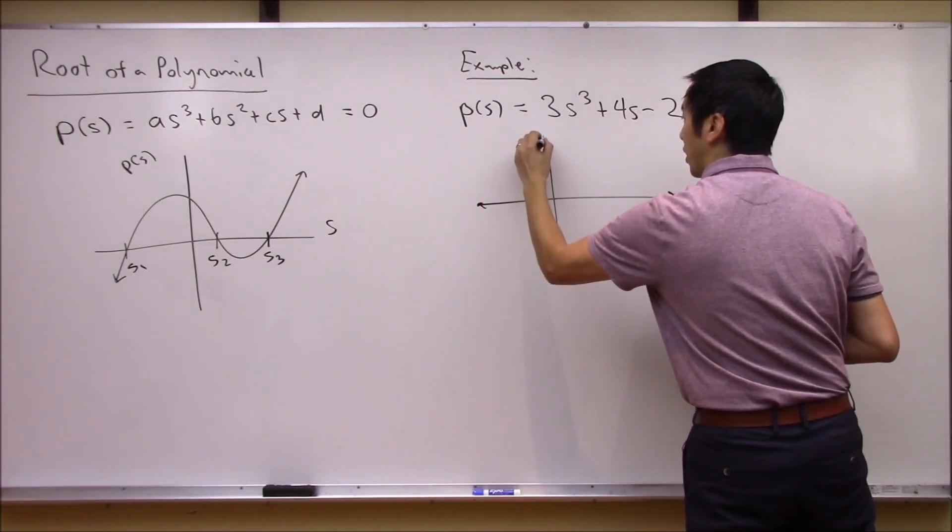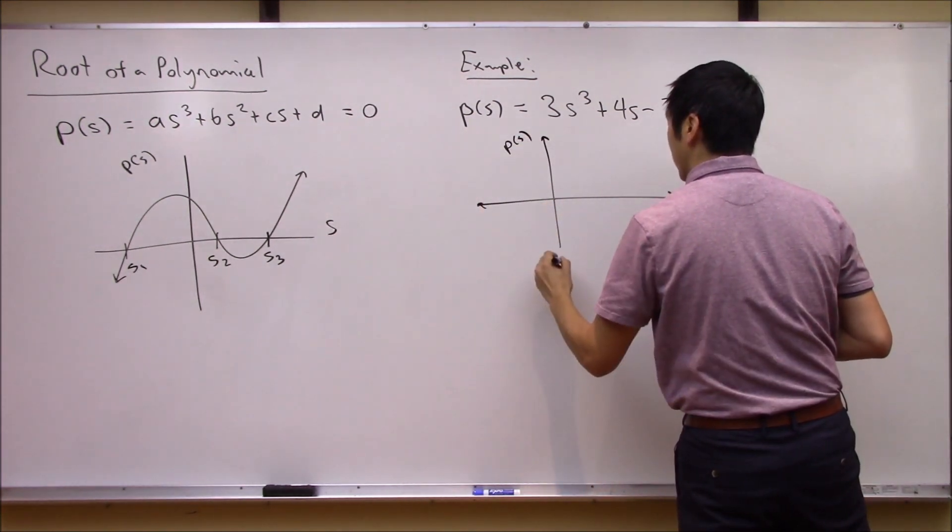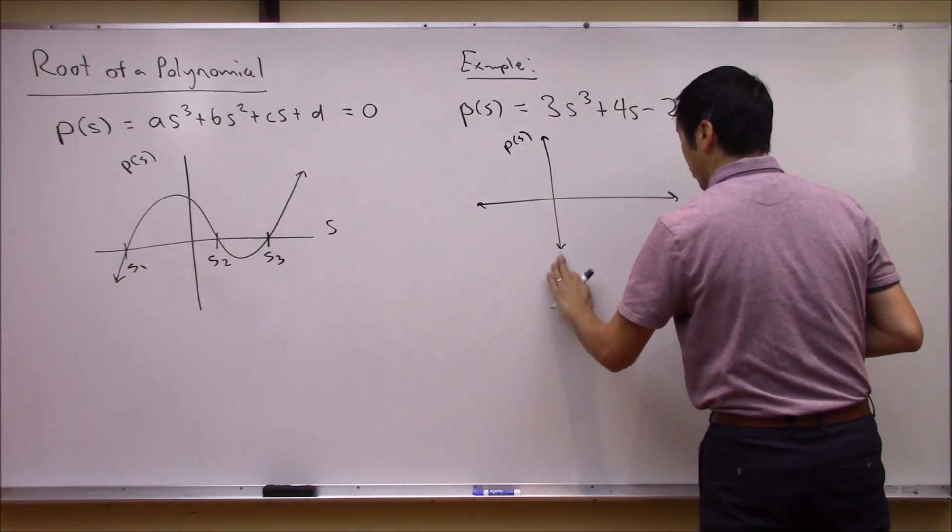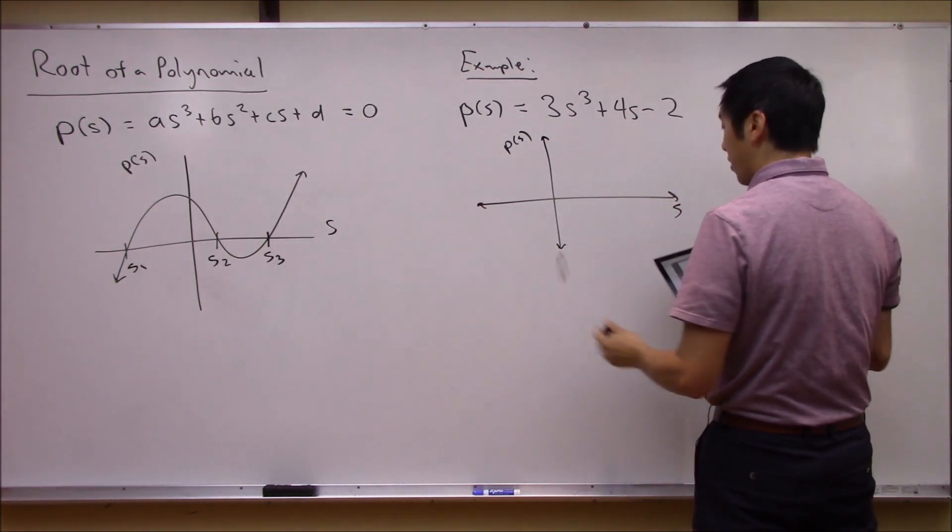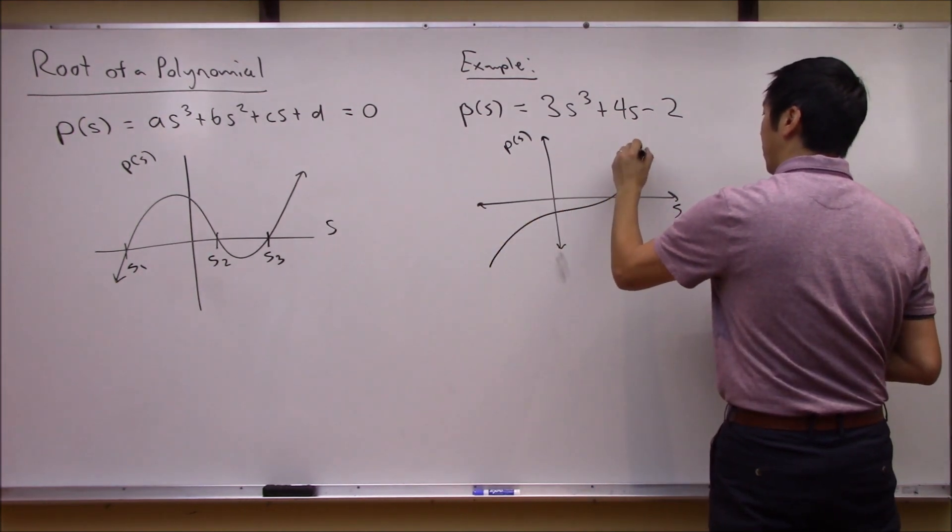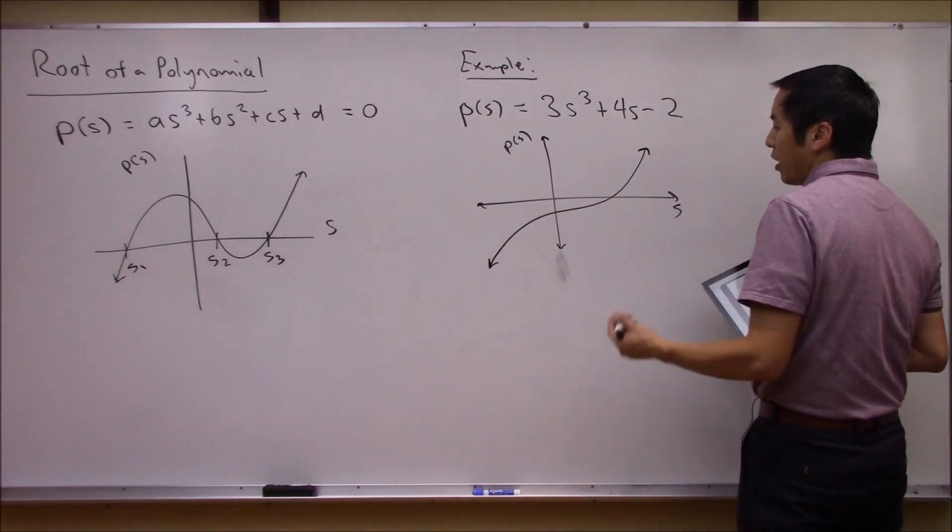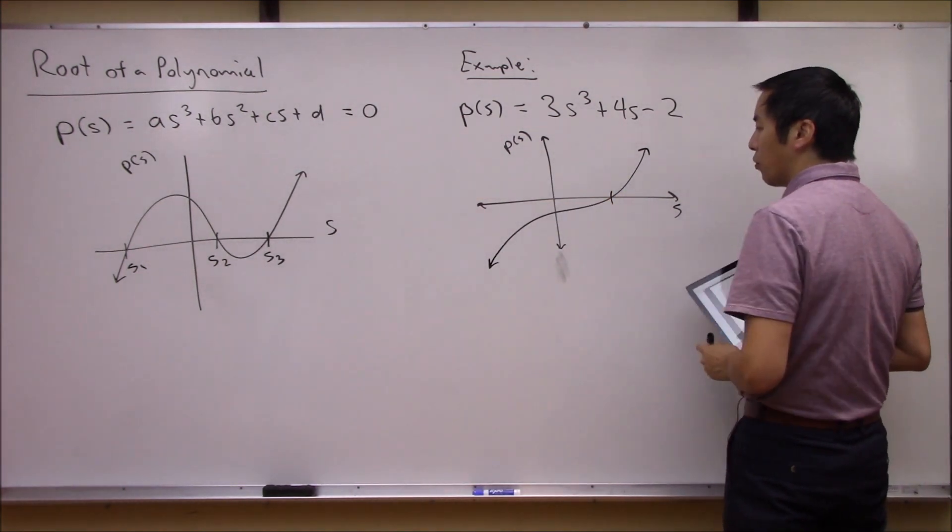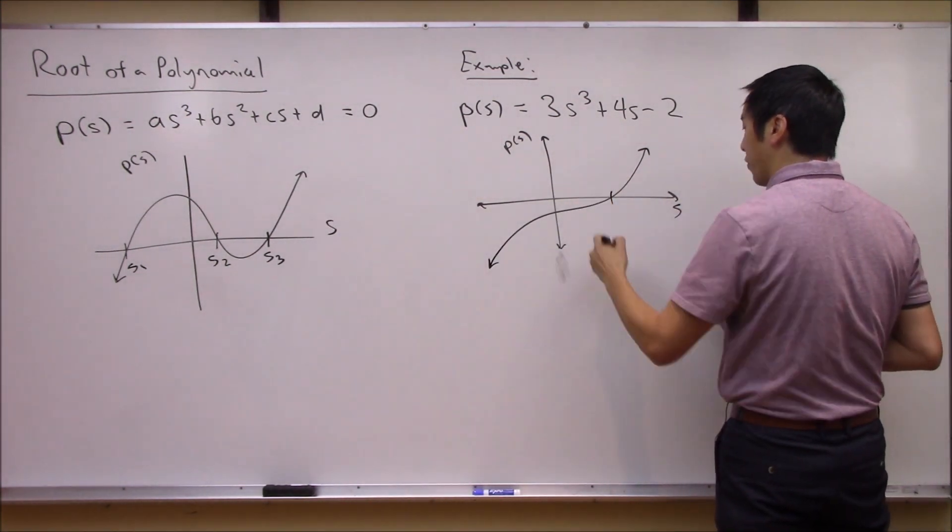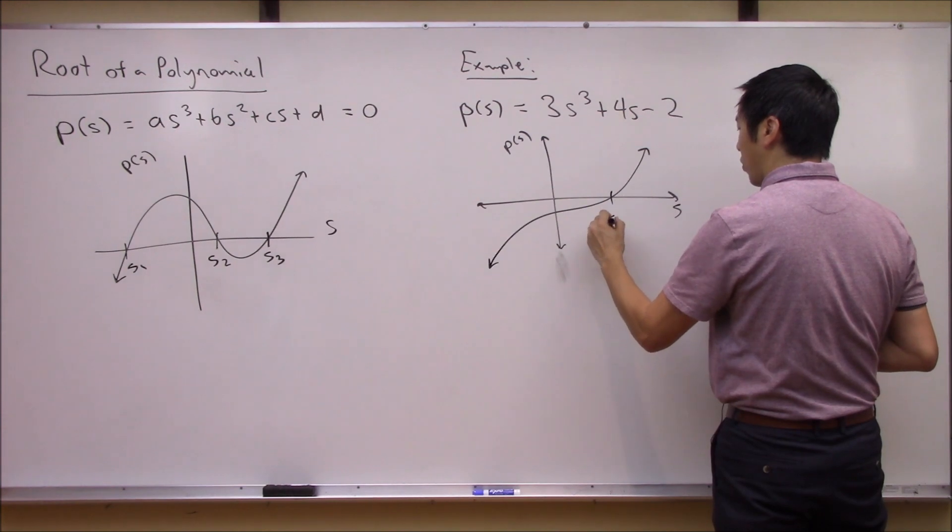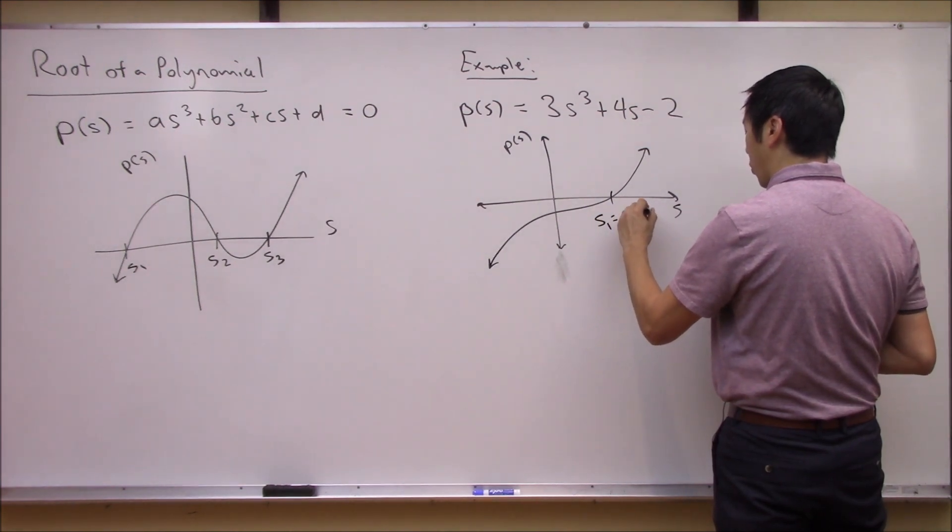If you graphically plot this out, what this looks like, if I just plot P(s) versus s, this thing looks something like this. So graphically you could find that there's a root of this polynomial at let's call this s1 equal to about 0.43.